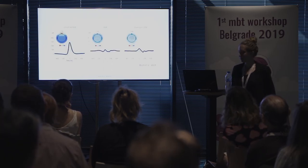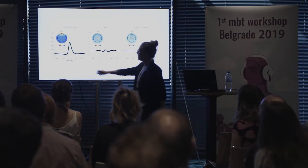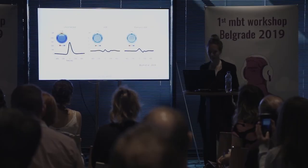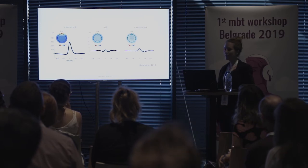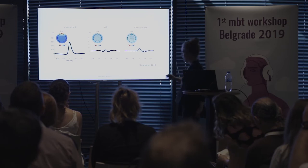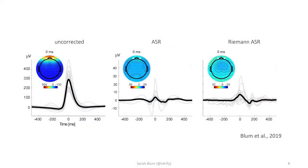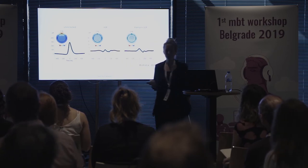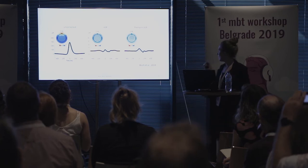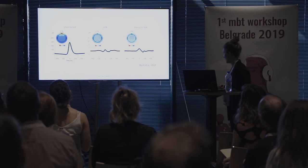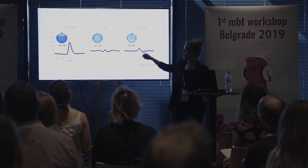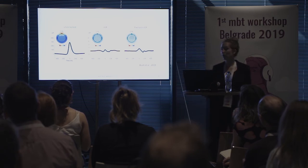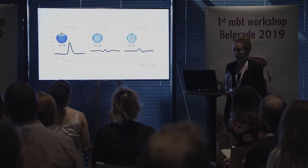Here you can see an eyeblink in the uncorrected data — a huge magnitude — and in the topography the expected spatial distribution of an eyeblink. In the ASR-corrected data, the spatial distribution is still preserved; you still see a residual of the eyeblink, and the amplitude is diminished by an order of magnitude. In the Riemannian ASR data, we see a similar pattern in the time course — possibly a residual eyeblink — but in the topography it looks very different. I don't want to say this is necessarily better; I just want to show you what Riemannian ASR does.